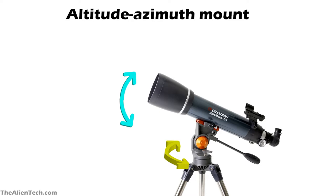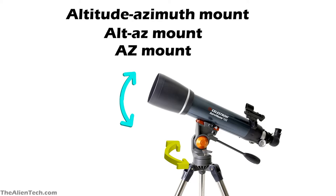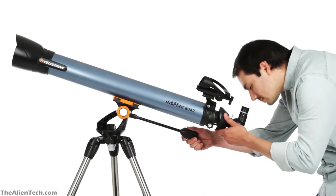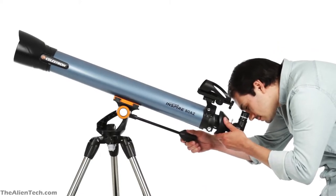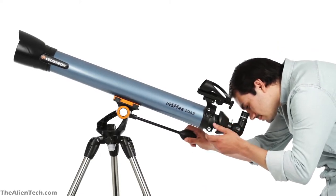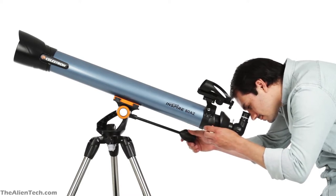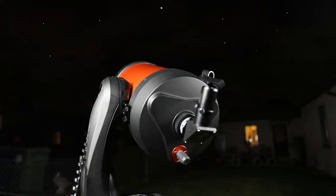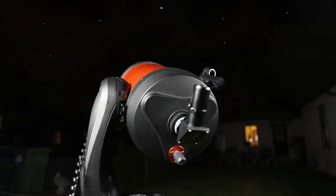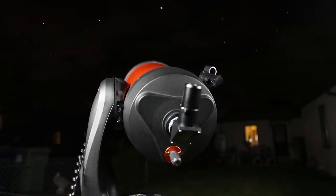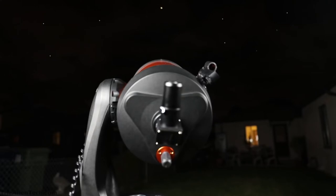In short form, it is called an Alt-Az mount or Az mount. Manual Alt-Az mounts have knobs so you can adjust altitude and azimuth. If you buy a really good quality Az mount, then it will have slow-motion knobs which will help you track targets very precisely. Nowadays, you can also get computerized Alt-Az mounts, which make it easier to track objects.